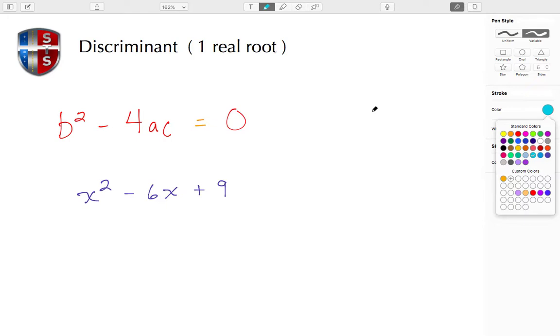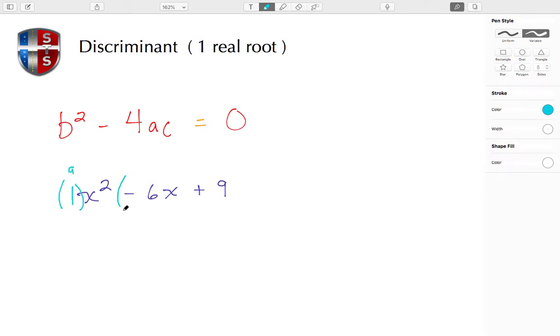First thing I want to do is label our a, b, and c in our polynomial. Here, this is understood to have a 1 in front, and that will be the a value.